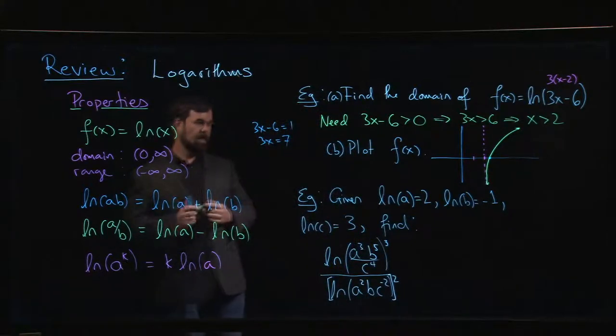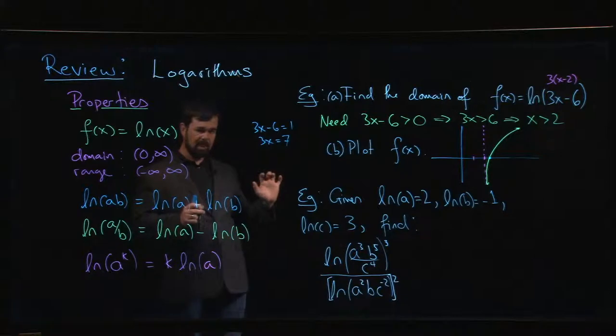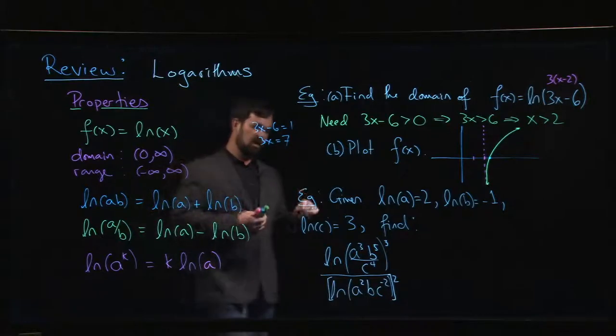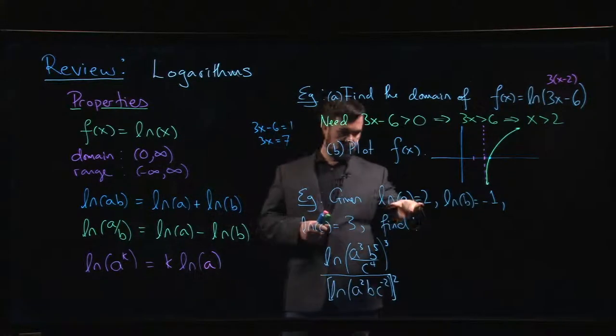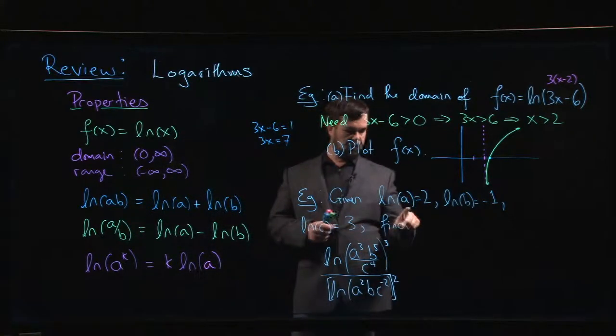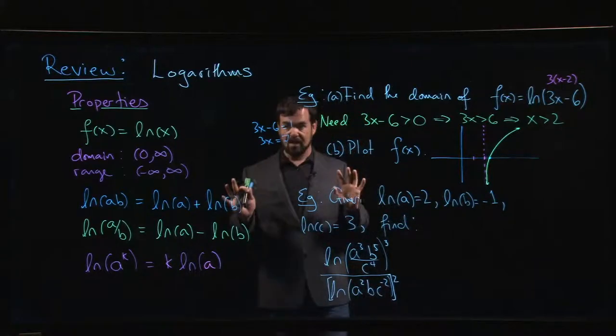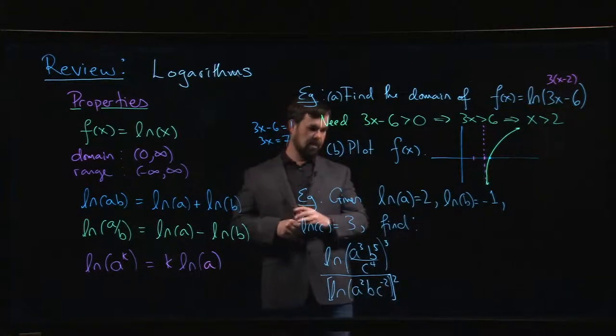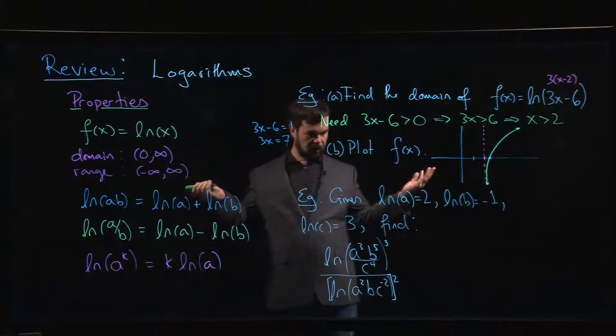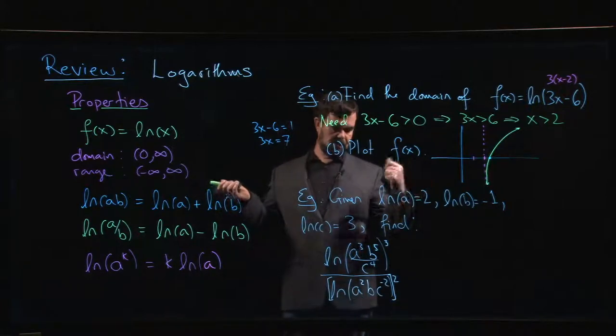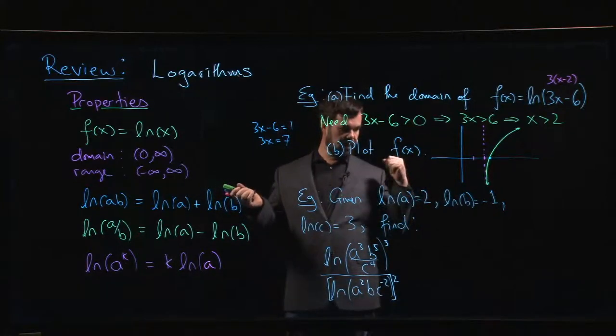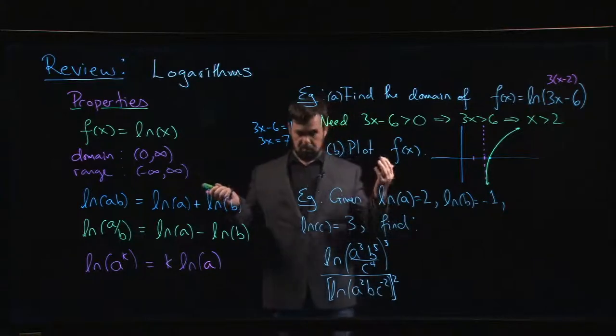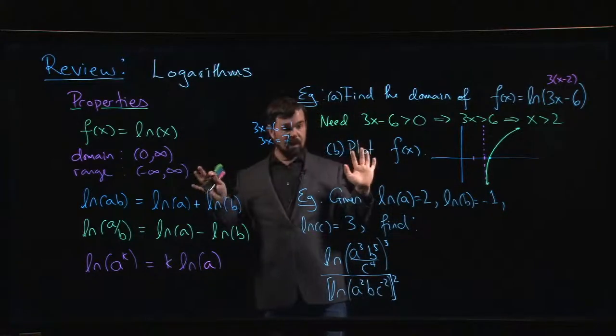Now one of the mistakes that people will make: this becomes a complicated question if you think that your first step should be to solve for a, b, and c. You're going to have a terrible time with this problem. Yes, I could solve for them. A is going to be e to the 2, b is going to be e to the minus 1. I could do that, but the point is that I don't have to do that.